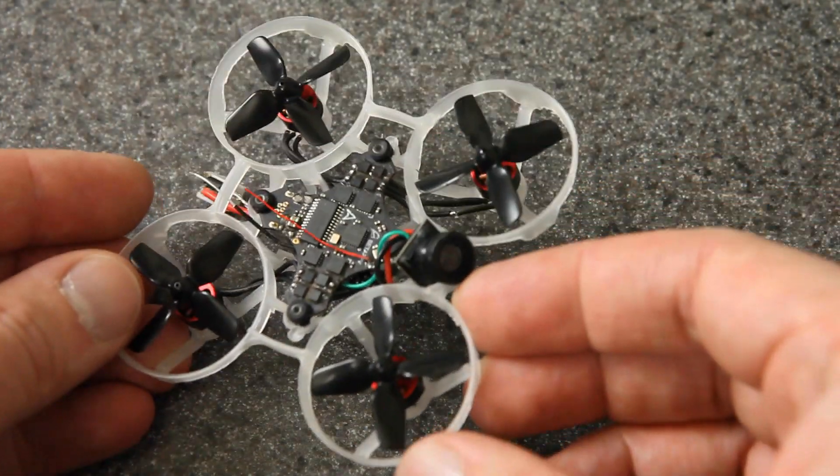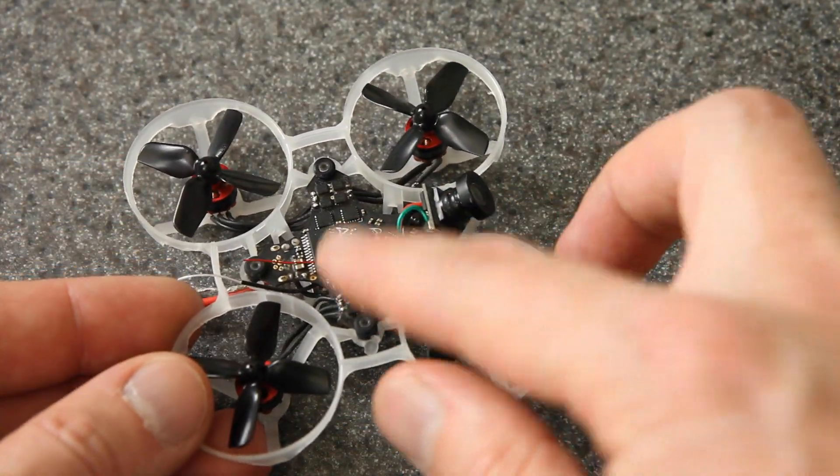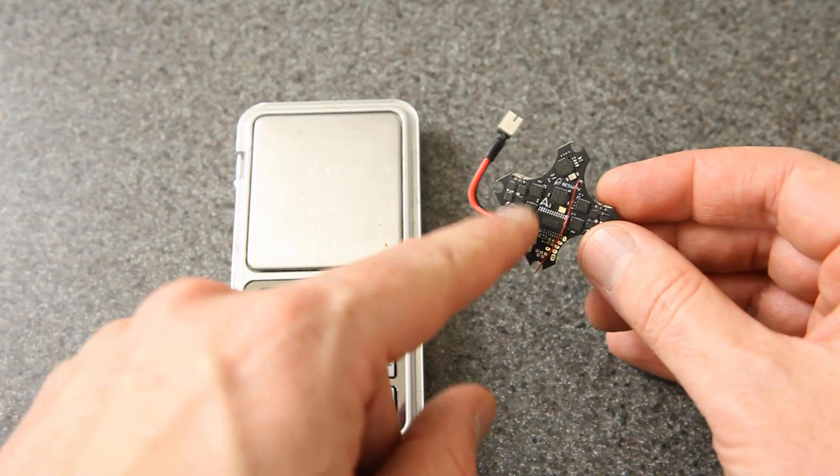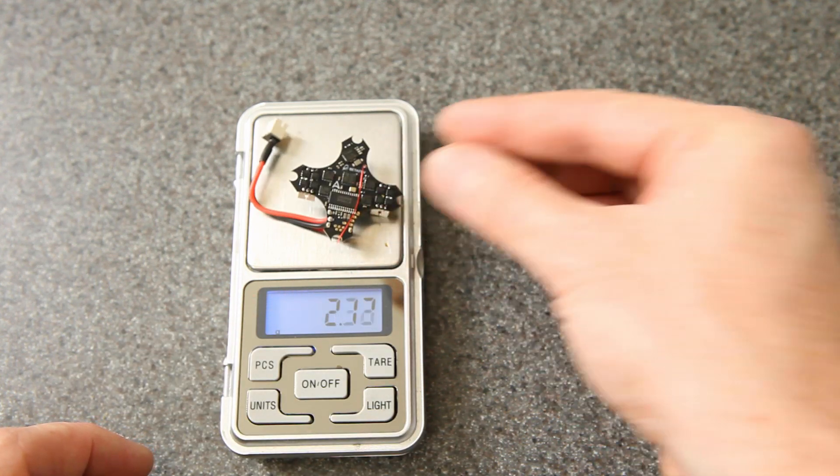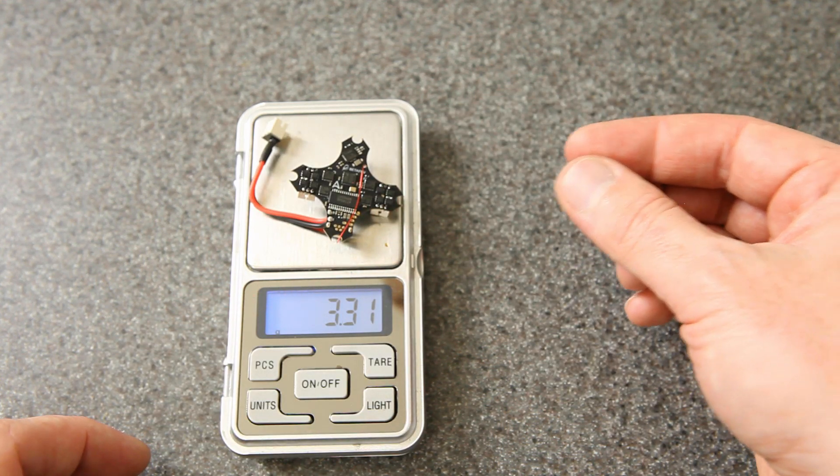Alright, now let's go through the components individually and talk about where all that weight goes. I'm going to start with the flight controller. Without any wires, the flight controller would be 2.7 grams, and with the provided wire, it's 3.3 grams.